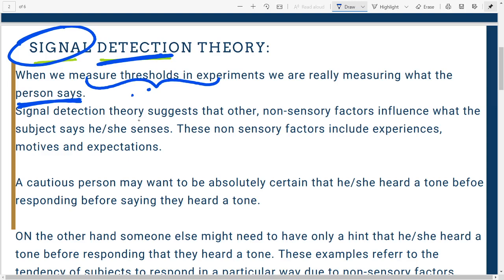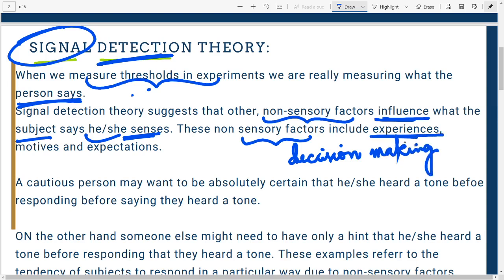That is the essence of this theory. It suggests that non-sensory factors influence what the subject says he or she senses. These factors influence our responses and decision making. What controls how we respond includes sensory factors and non-sensory factors which play a role in our decision-making process. These include experiences, past experiences, motives, motivation, and expectations.